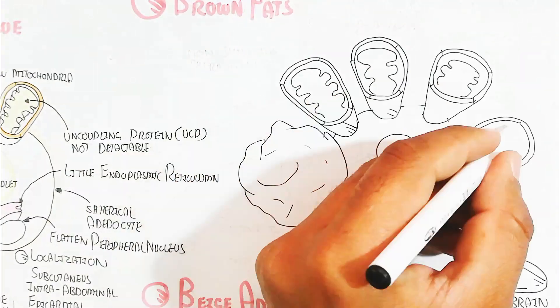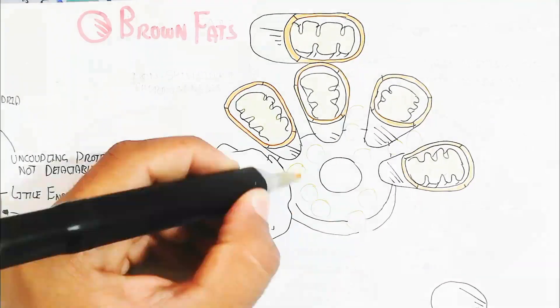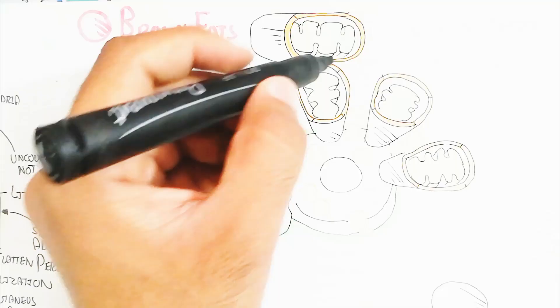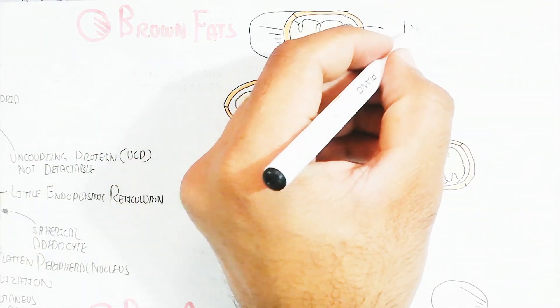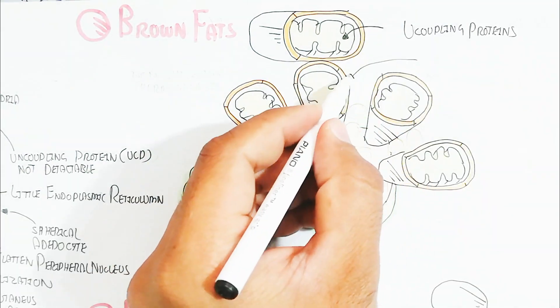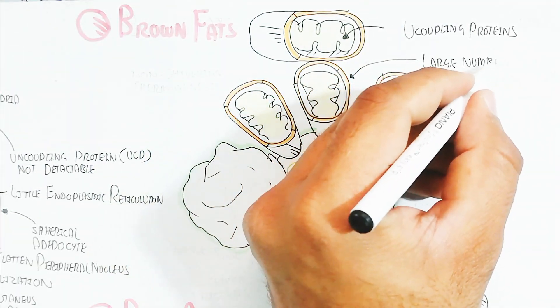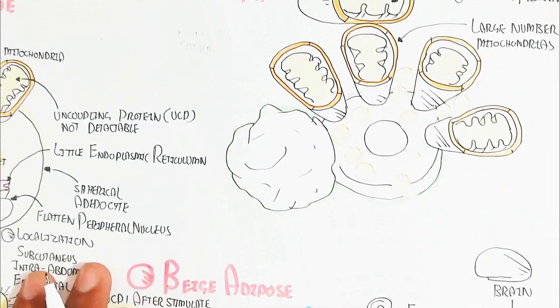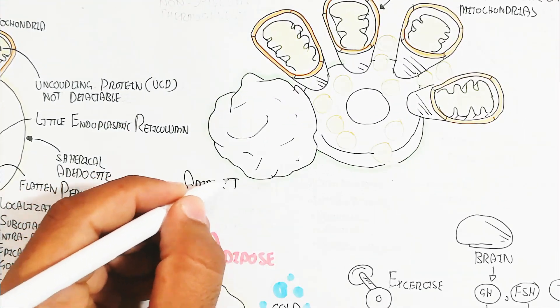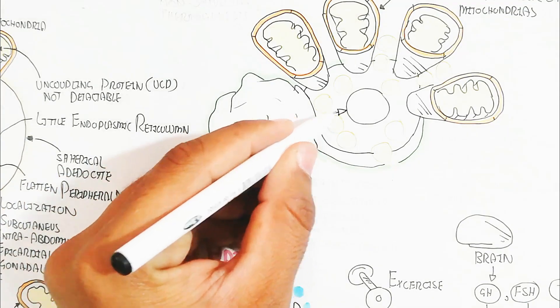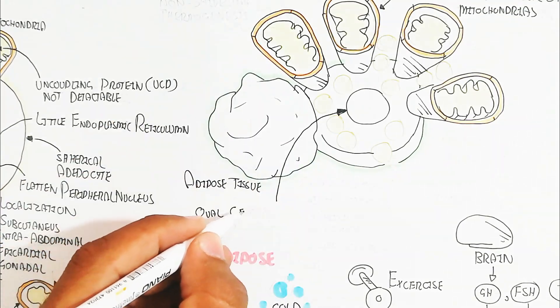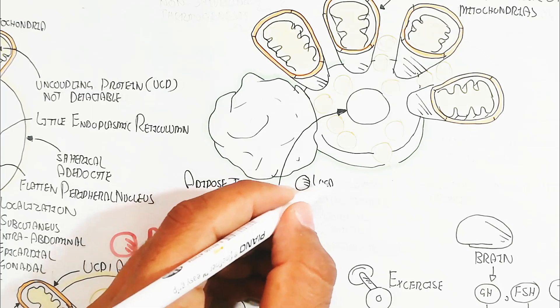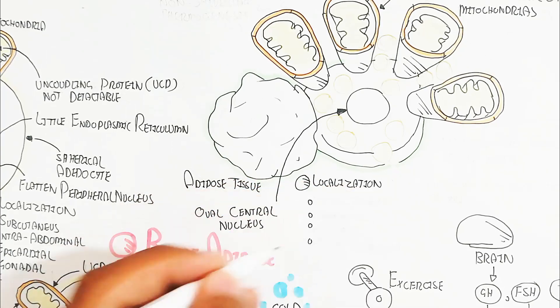Let's begin to understand the brown fat. The brown fat contains a lot of mitochondria. And this adipose tissue basically contains a lot of the UCP protein. The transcription of the UCP protein will be more in this adipose tissue. And in this way, uncoupling protein is more. And large number of mitochondria are present. This is the oval central nucleus.